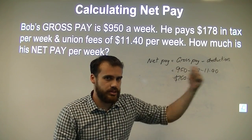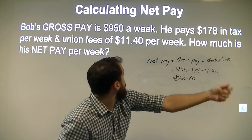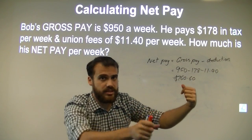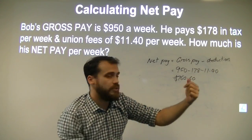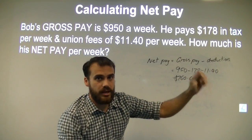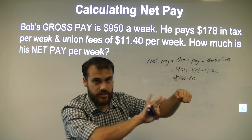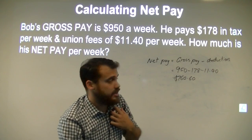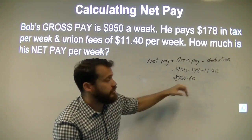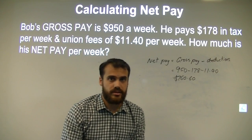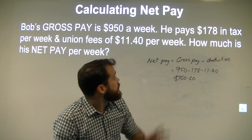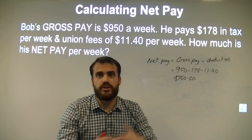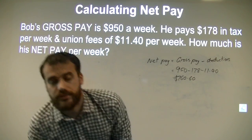So his employer gave him $950. Before it got all the way to him, some tax came out, some union fees came out. And after that $950 and the deductions, the employee gets $760.60. That's net pay. In the next video, we'll look at a slightly more complicated version of this.